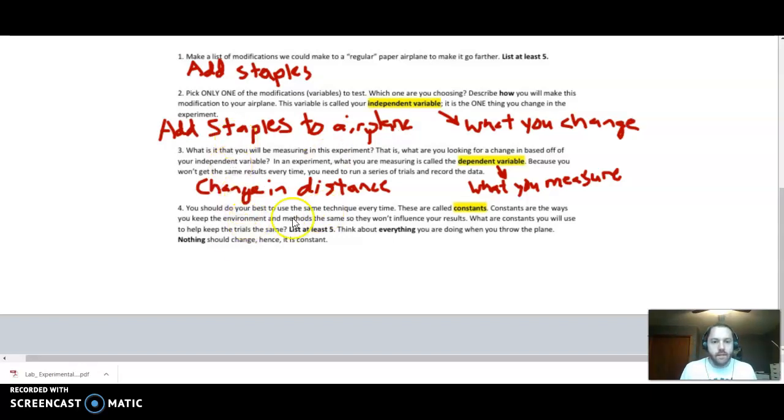And then it says you should do your best to use the same technique every time. These things are called constants. When we're in class together, I stress this beyond belief. A lot of times, students are like, I have to come up with five constants. As a class, we can usually come up with about 14 pretty easily. Constants are things that you need to control. Because realistically, in any experiment, you should only have one exact thing change. Anything else that changes is going to affect your results. You wouldn't know what caused it. To give an example, I think students are more familiar with.